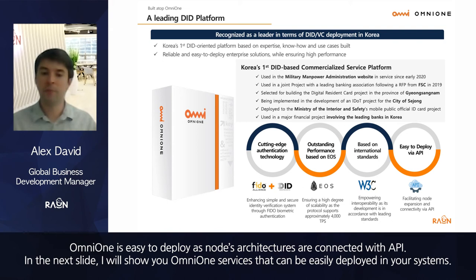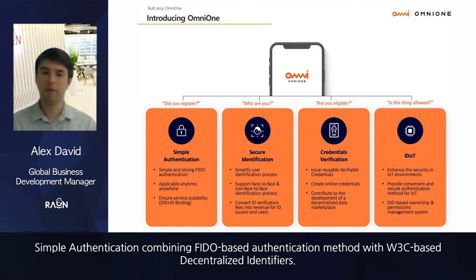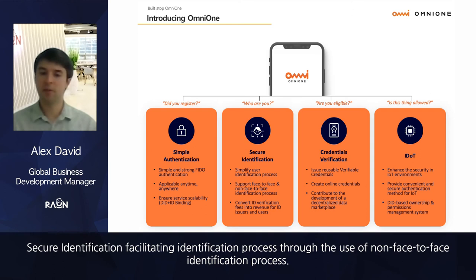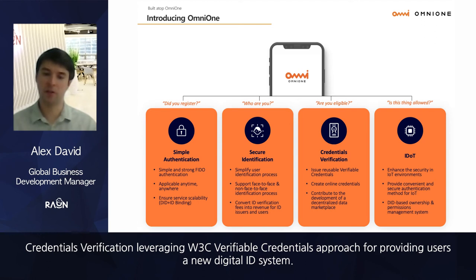OmniOne services include: simple authentication, combining FIDO-based authentication with W3C-based decentralized identifiers; secure identification, facilitating identification through non-face-to-face identity verification; credential verification, leveraging the W3C verifiable credential approach for a new digital ID system; and Identity of Things (IDoT), enhancing security in IoT environments.